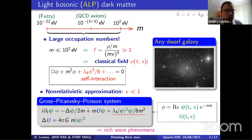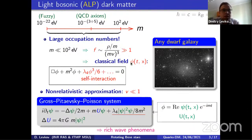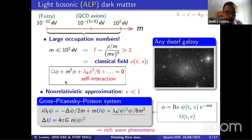Like Joshua, I will consider light bosonic dark matter with particle masses somewhere between 10^-22 eV and 10^2 eV. This case is very interesting because if you estimate the occupation number of this dark matter in any dwarf galaxy, you find it is much larger than one. This means the dark matter in this mass region can be described by a classical field — the Klein-Gordon equation with a mass term and self-interaction λφ³.